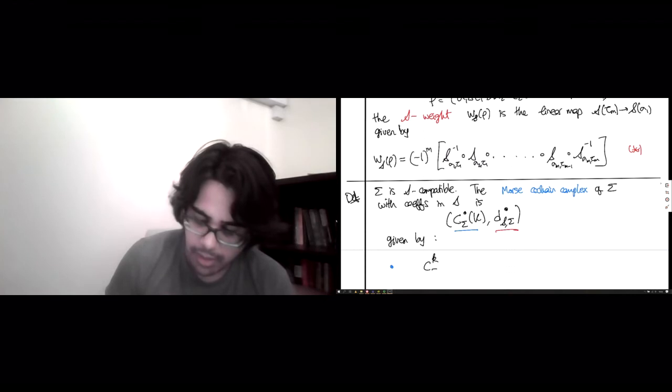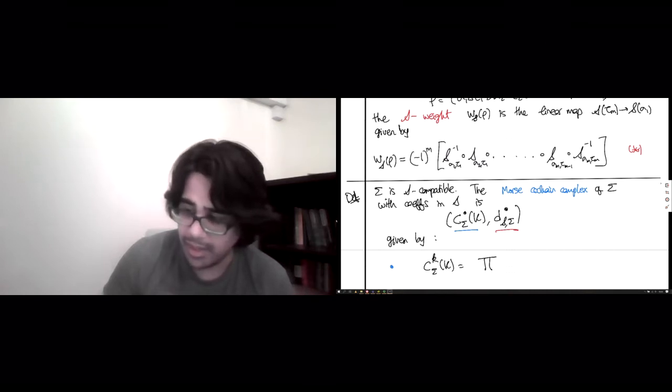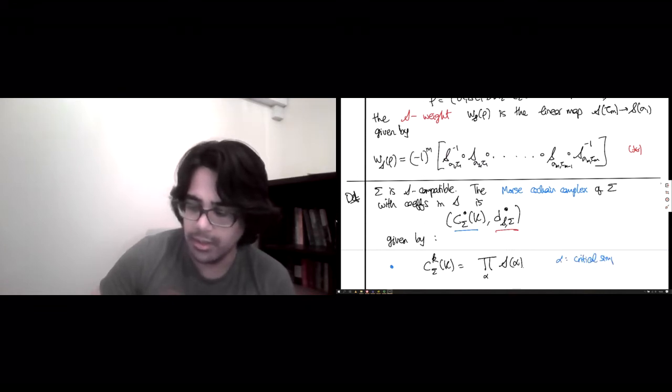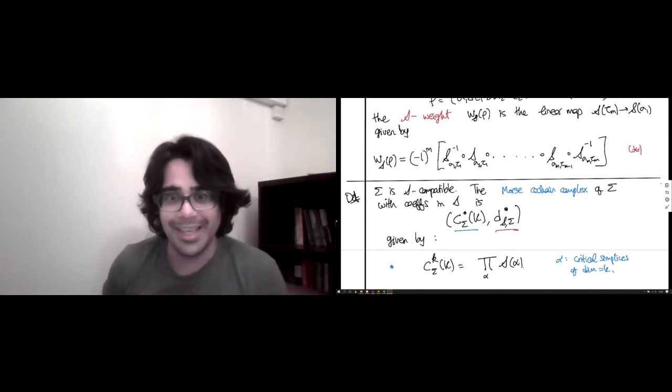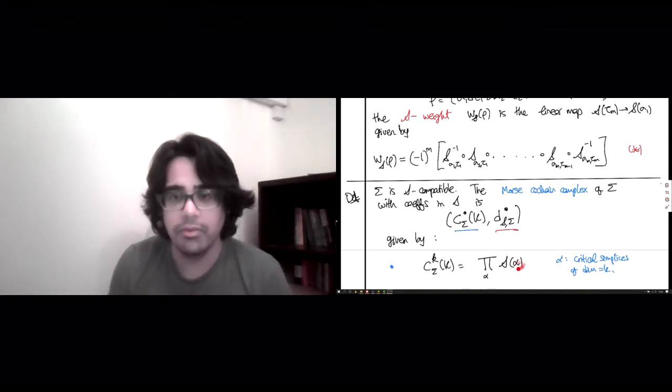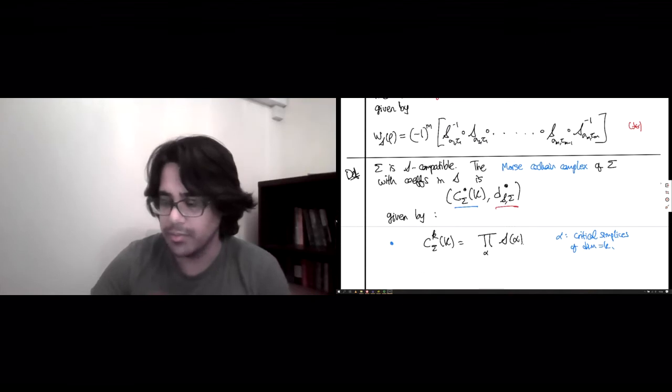So let's do the vector spaces first and the linear maps next. So the vector spaces are going to be in dimension K. It's going to be the product over certain simplices, let's say alpha, of the stalk over alpha. And what are these simplices? Well, they have to be critical ones. So critical simplices of dimension K. So that's good. This looks very, very similar to everything we've seen before. I mean, if this was the constant sheaf, then we would just have as many copies of the ground field as we had critical simplices. And so this does reduce to the thing we'd expect for the constant sheaf. Anyway, this works for all sheaves, not just the constant one.